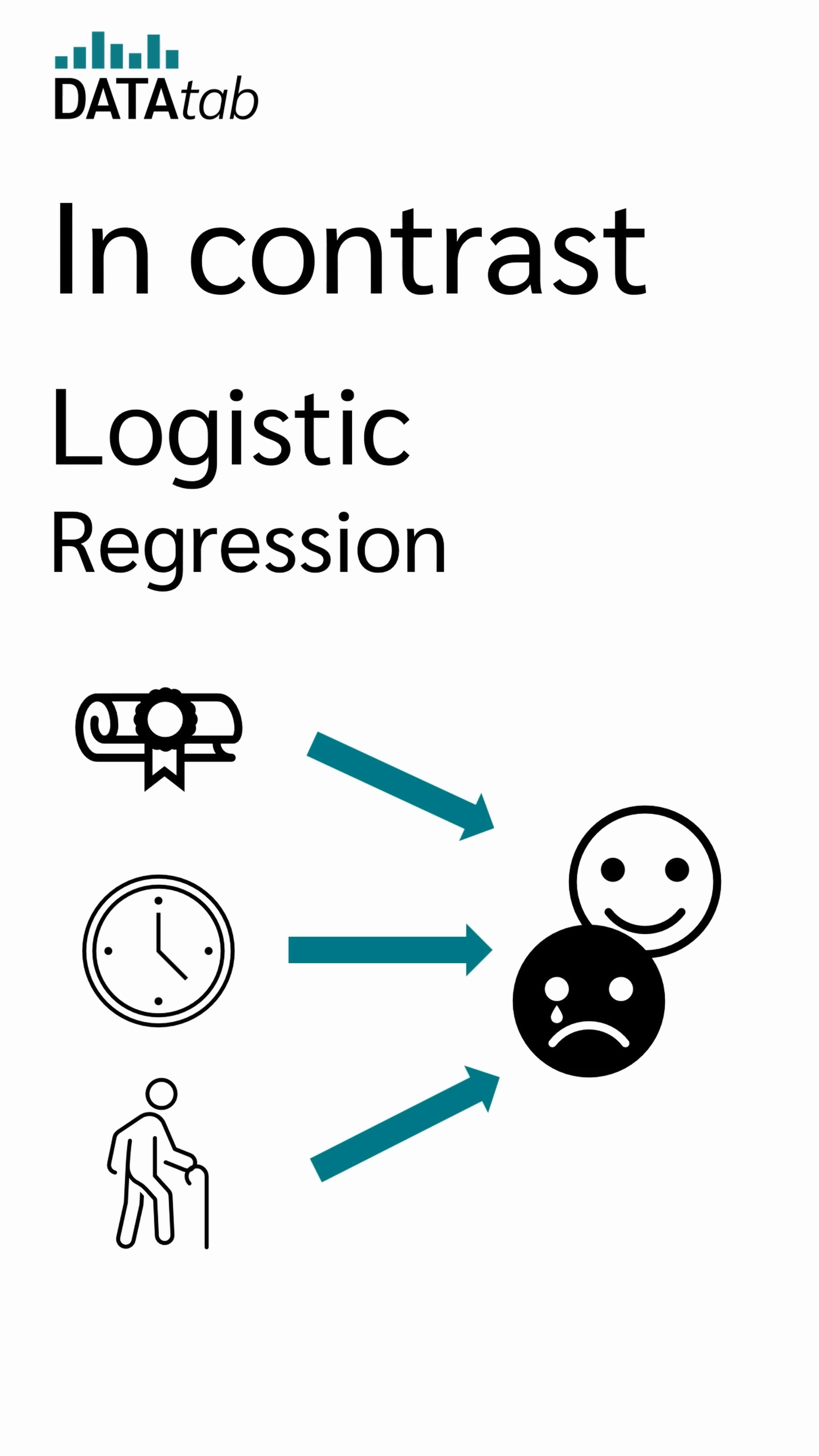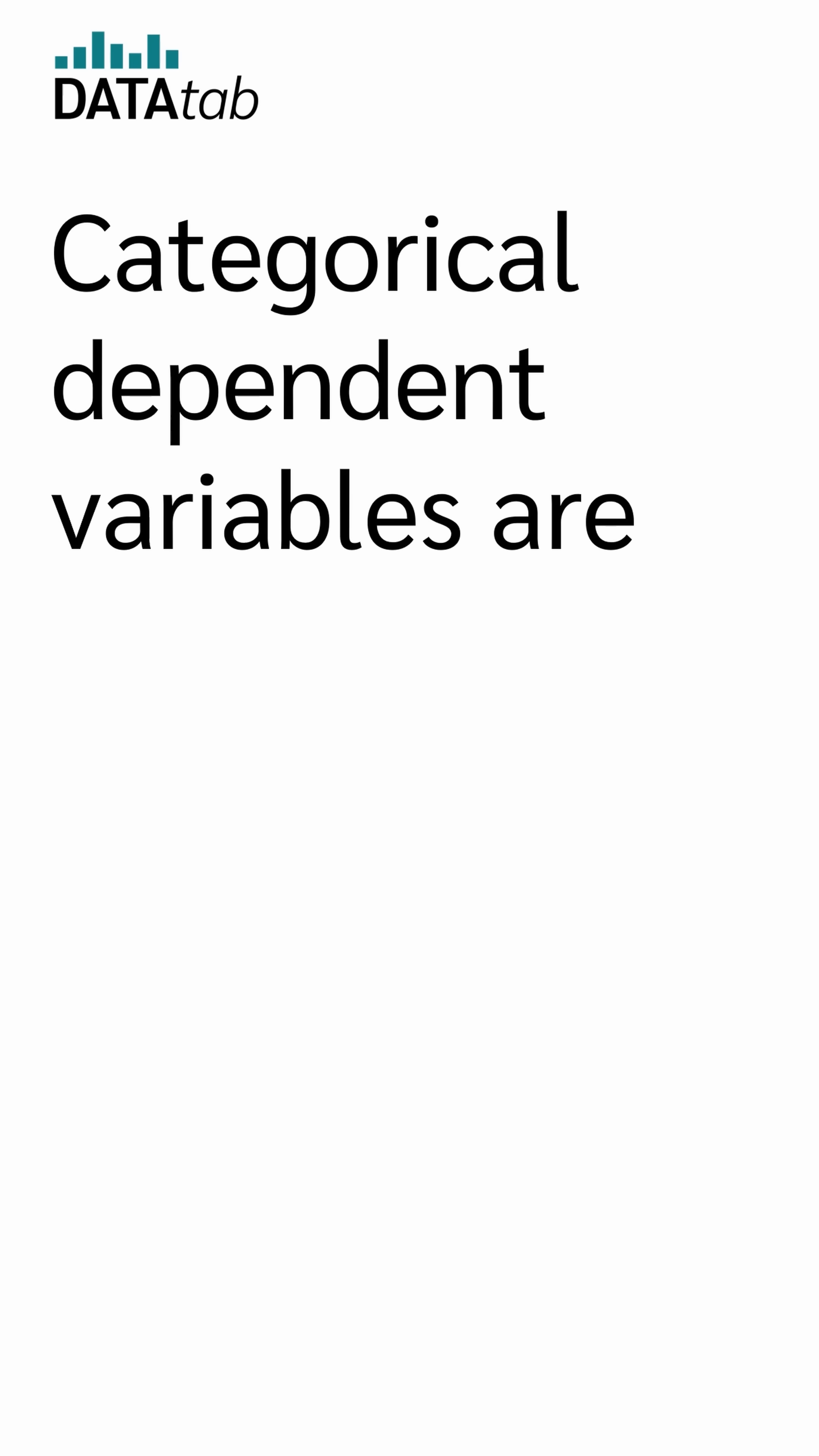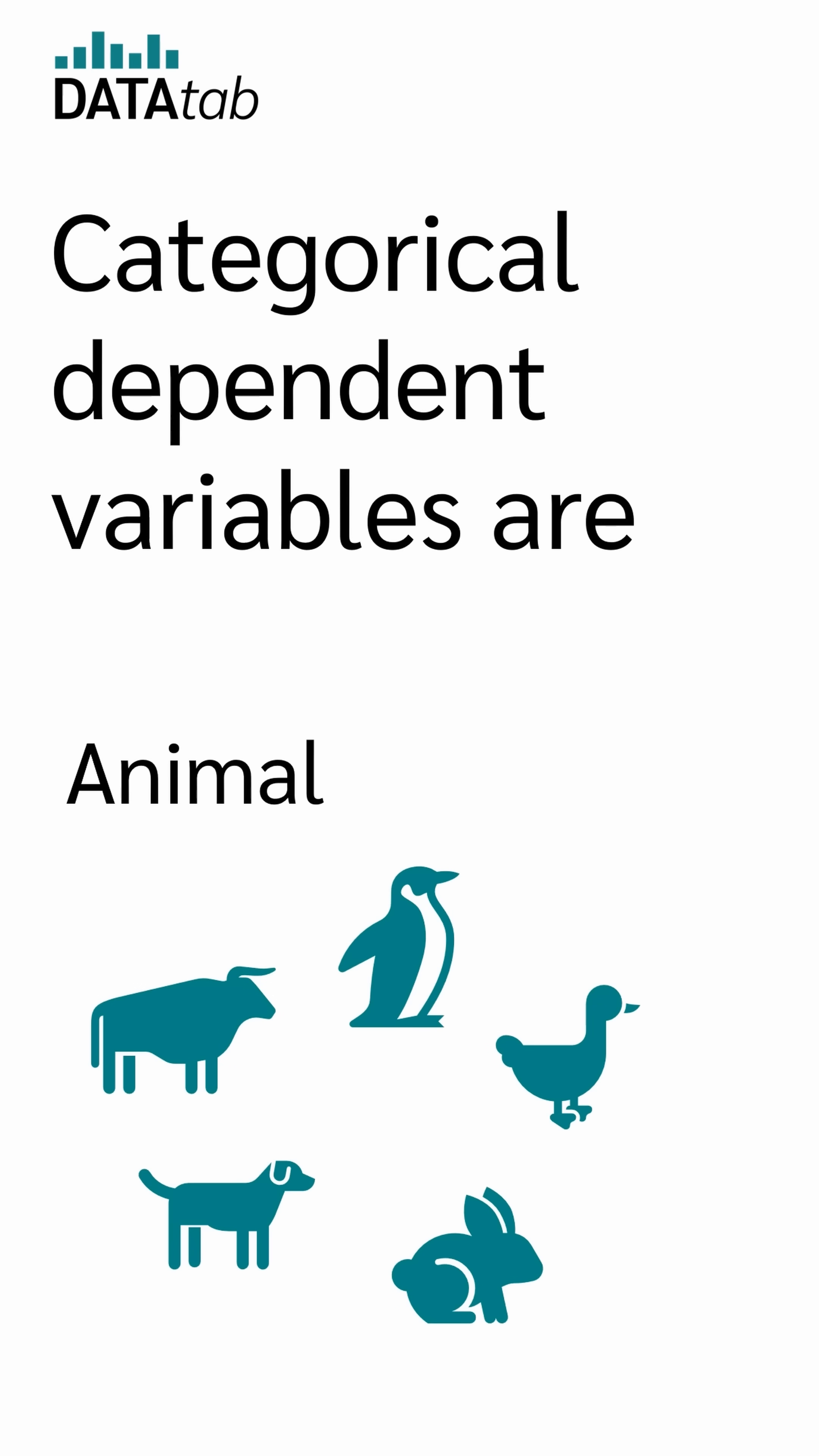In contrast, logistic regression is used when you have a categorical dependent variable. Categorical variables are, for example, if a person is at risk of burnout or not, if a person is diseased or not, or type of animal.